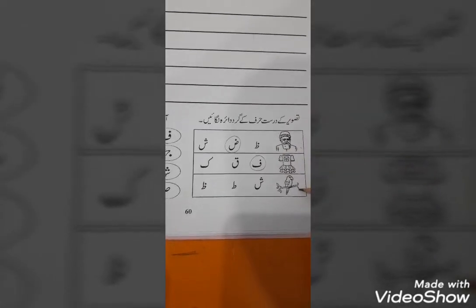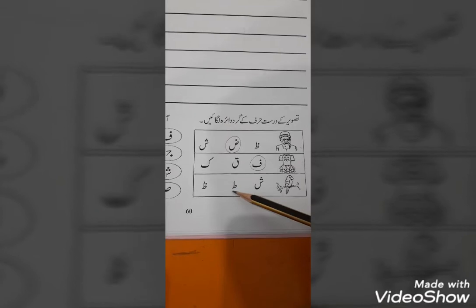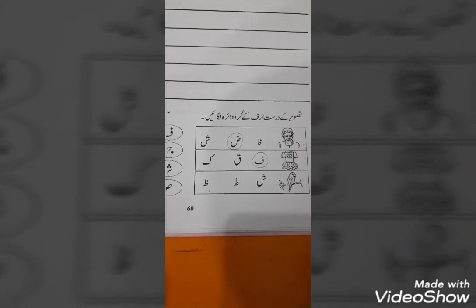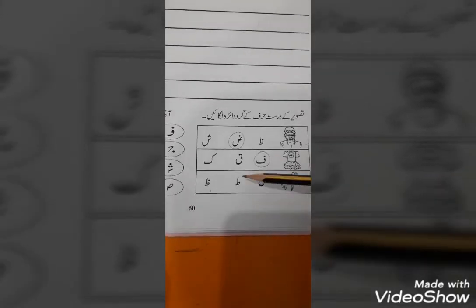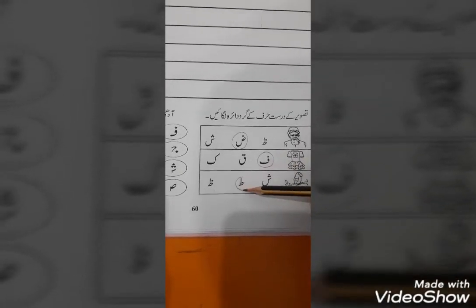The next picture is Tota. Now, find out its beginning sound of Tota. Sheen. Toing. Zoing. Toh, tota kon se harf se shuru ho ta hai? Can you guess? Yes. Right. Toing, Tota. So, circle it.